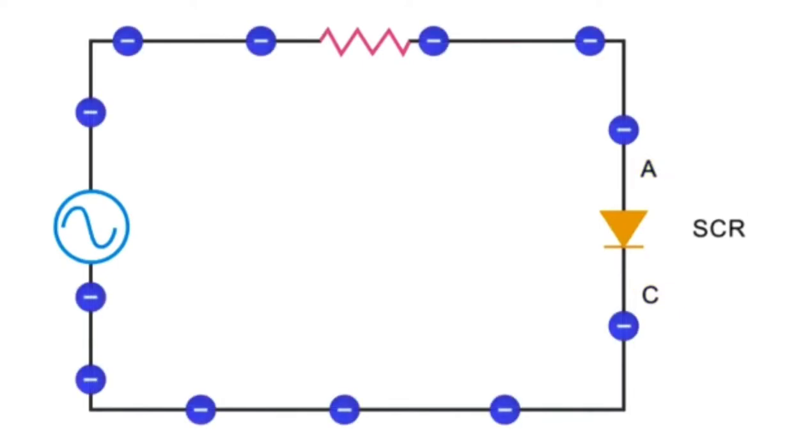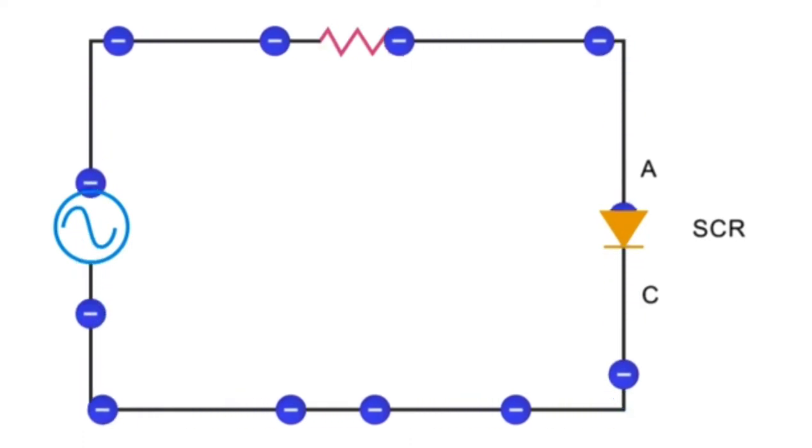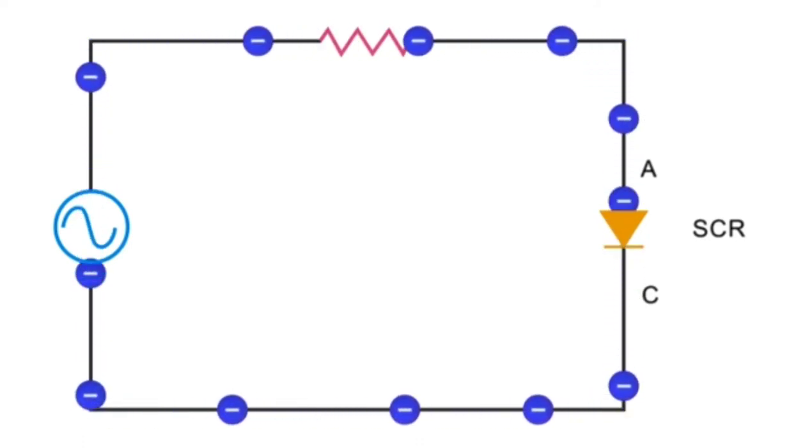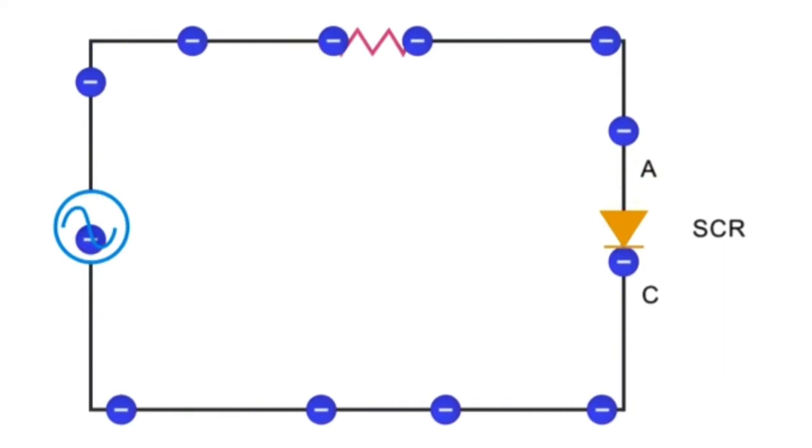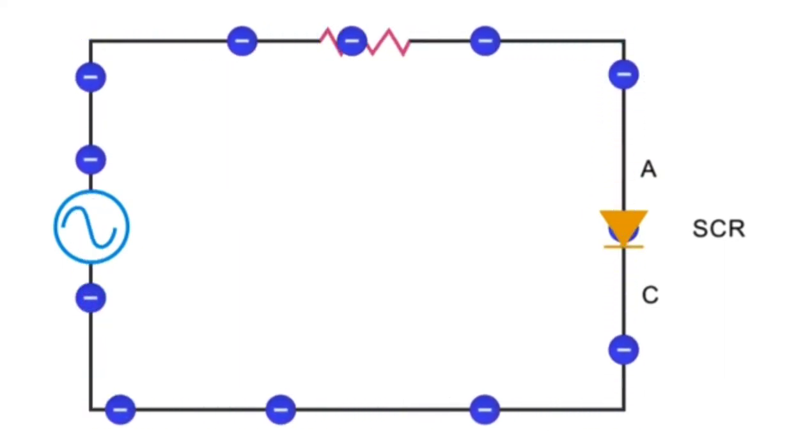However, unlike other diodes which only perform an on and off function, a SCR can regulate a flow of electricity with gradation when forward biased.